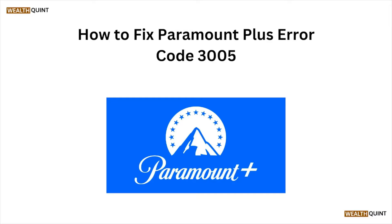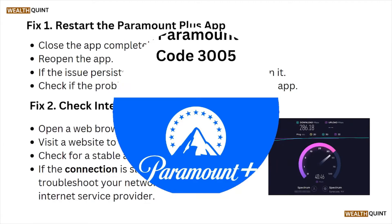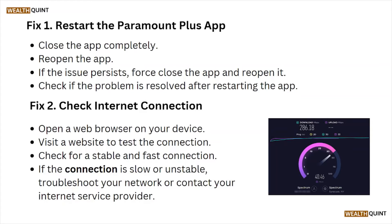Hi, welcome back to the YouTube channel. In this video, let's see how to fix the Paramount Plus error code 3005. Fix number one is to restart the Paramount Plus app — close the app completely and reopen it. If the issue persists, force close the app and reopen it, then check if the problem is resolved after restarting.